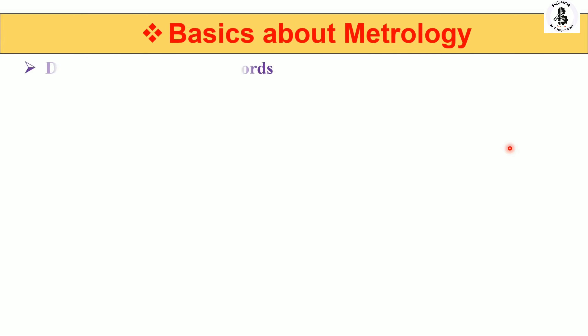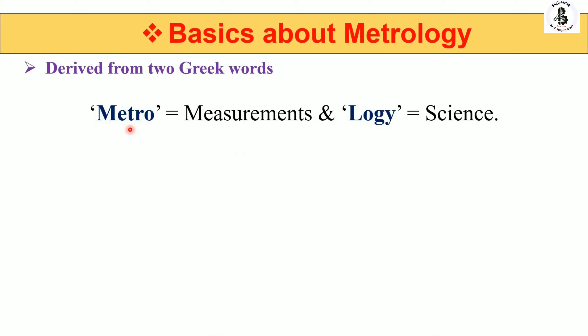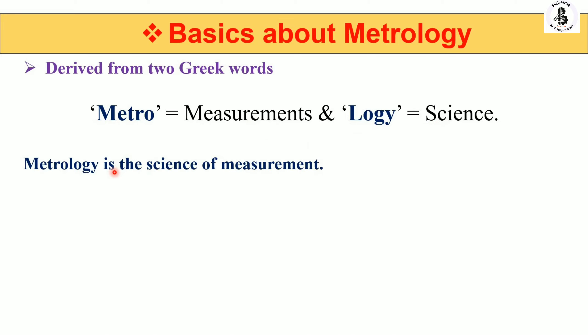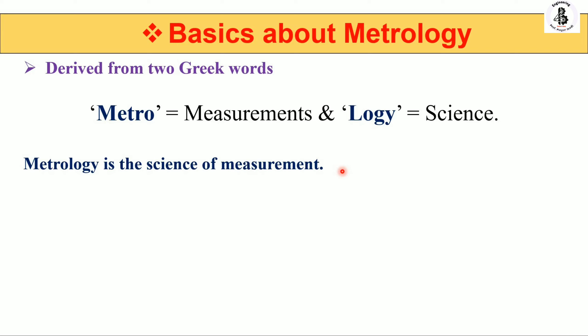In the case of metrology, this word is derived from 'metro' meaning measurement and 'logi' meaning science. So basically the term metrology is defined as a science of measurement. It is divided into two categories: industrial metrology or medical metrology. Here we focus on how important inspections are in the field of engineering metrology.